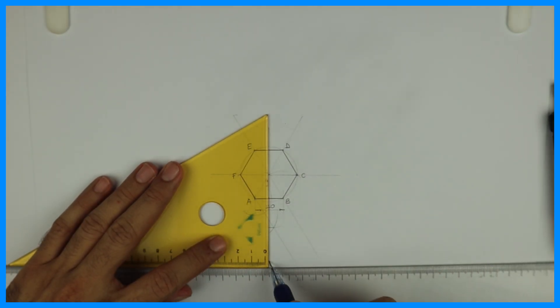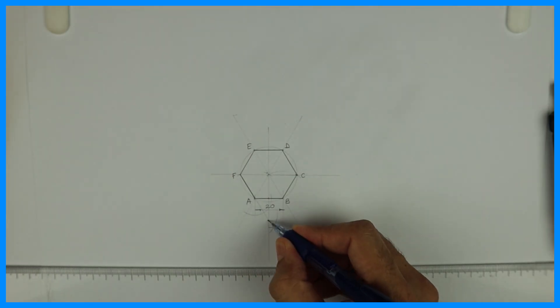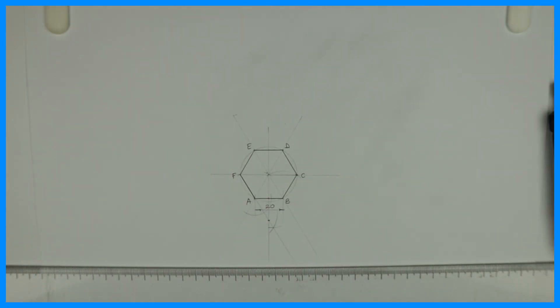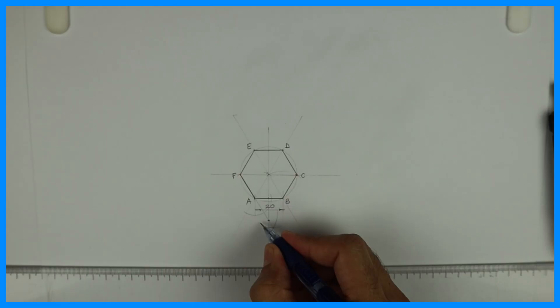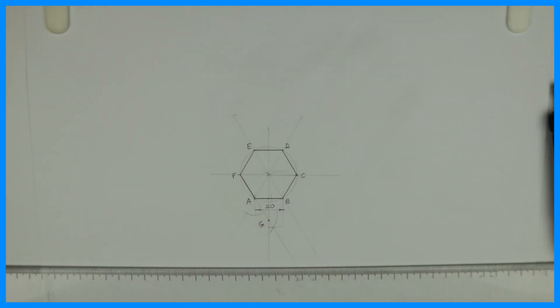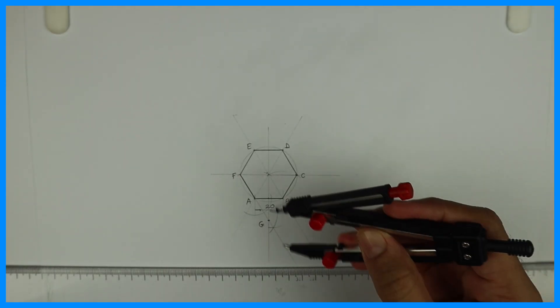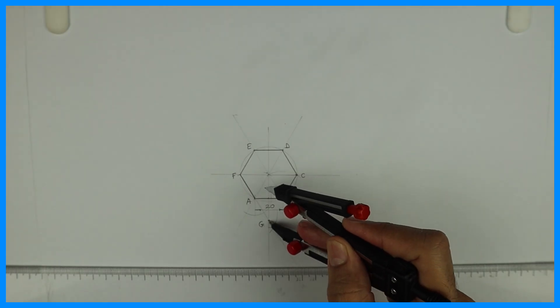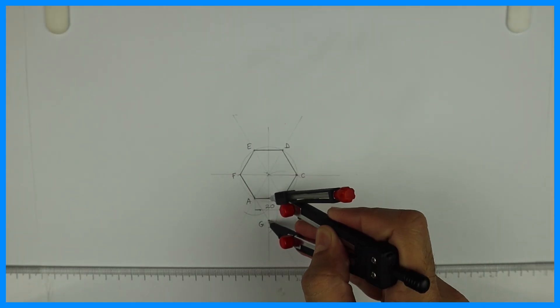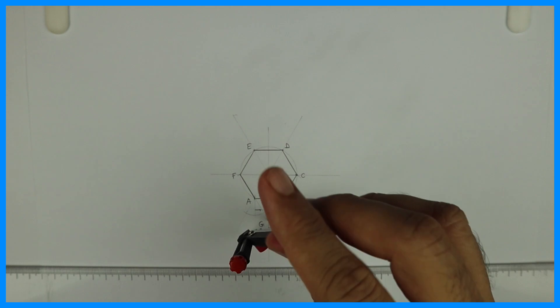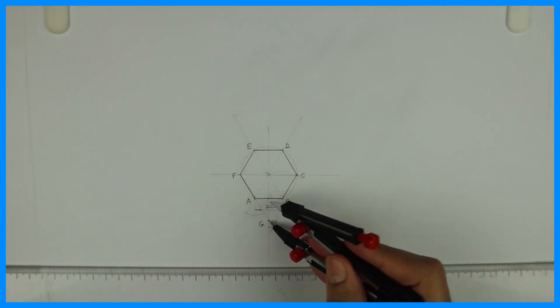Now we join the bisector and draw a vertical line. Wherever it will meet, that will be point G. Now we take G to this radius, touching the side AB, and draw a circle.